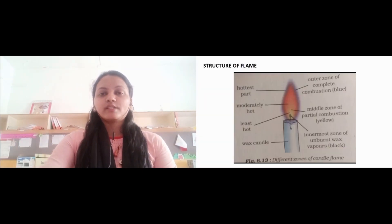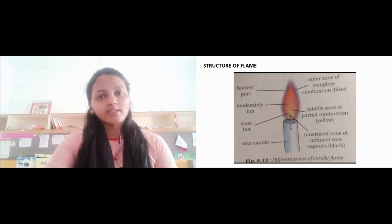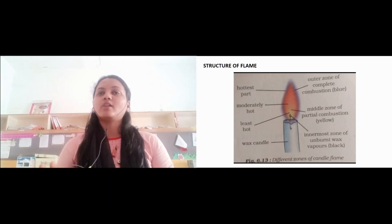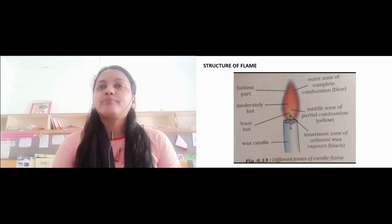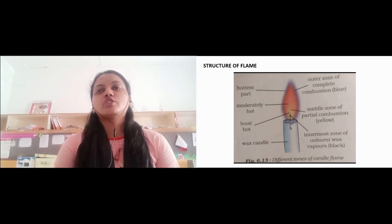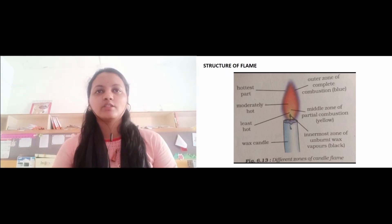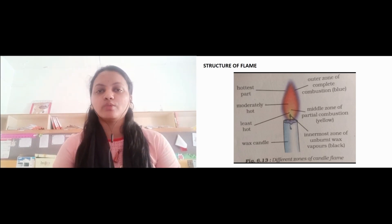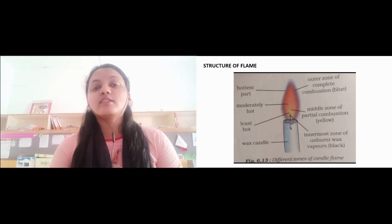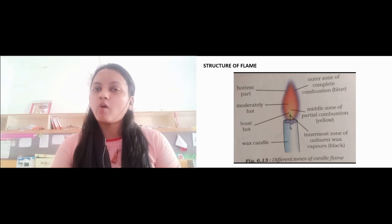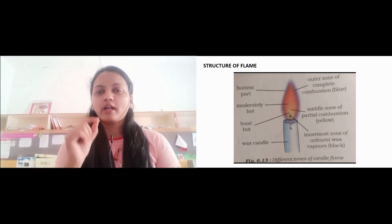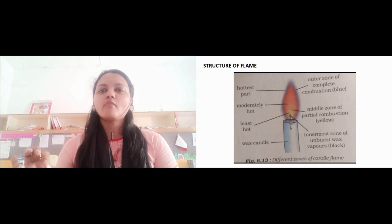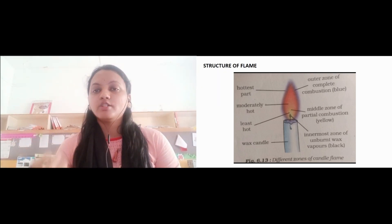We will see different regions of flame in the picture — it is even there in your textbook. The outermost layer is the outer zone of complete combustion, which is generally light blue in color, and that is the hottest part. The next part is the middle zone, which is yellow in color and is moderately hot. The innermost part, which is near to the wick, is the least hot part — it is the innermost zone of unburnt wax.